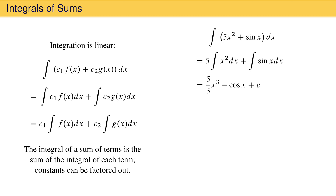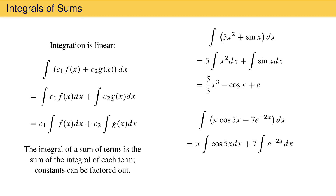As another example, consider the integral of pi times cos 5x plus 7 e to the minus 2x. Again, this is not an integral we have seen, but we can distribute the integral and factor out the constants to obtain pi times the integral of cos 5x plus 7 times the integral of e to the minus 2x. Using our rules, we obtain pi over 5 times sin 5x minus 7/2 e to the minus 2x plus a constant of integration. Both constants of integration have been combined into one.